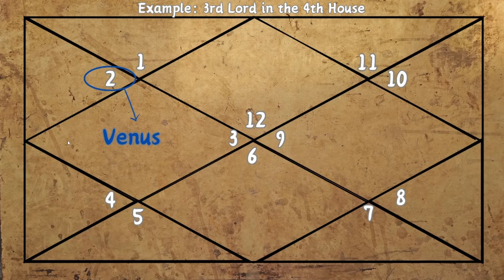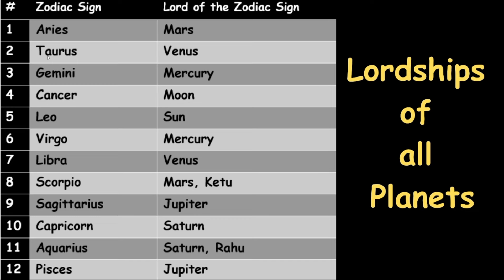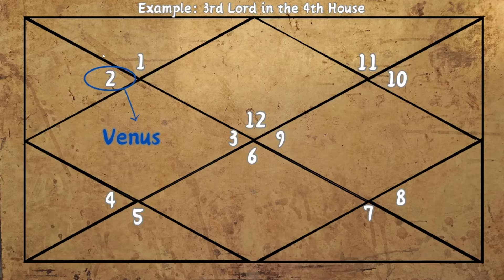Let us understand this with an example. If in your chart the third lord is in the fourth house, here is how you conclude that. In this chart, the first house has 12 written, the second house has 1, and the third house has 2. From the table, 2 corresponds to the Taurus zodiac sign, and the lord of Taurus is Venus. So the lord of the third house is Venus. And if Venus is placed in the fourth house of the birth chart, then the third lord is in the fourth house.